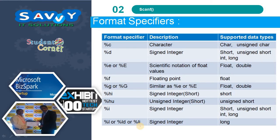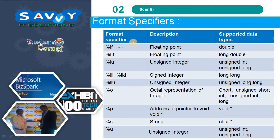Format specifiers used with scanf include: %c for character; %d for signed integer; %e or %E for scientific notation of float values; %f for floating point; %g or %G similar to %e or %E for float or double; %hi for signed short integer; %hu for unsigned short integer; %l, %ld, or %li for signed long integer; %lf for floating point double; %lu for unsigned long integer; %lli or %lld for signed long long integer; %llu for unsigned long long integer; %o for octal representation of integer.